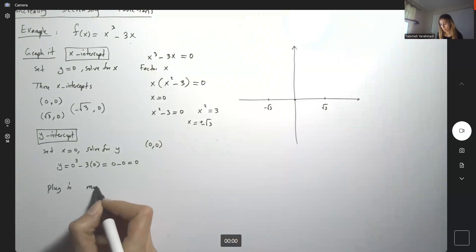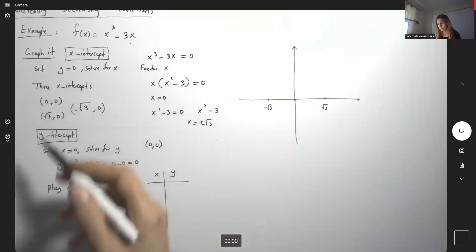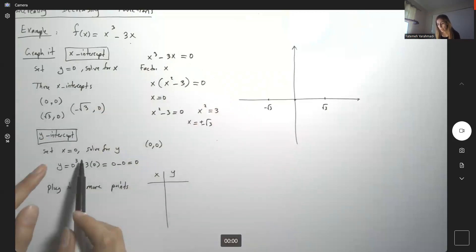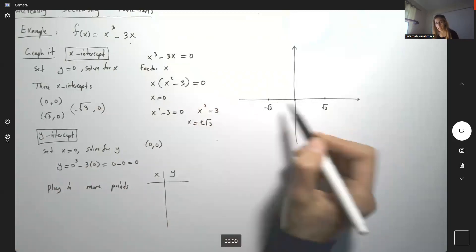Plug in more points. If you have time, plug in 10 points for x and y. So far I know that when x = 0, y = 0. I'm not going to plug those in again. I'm going to plug in some values in between and before.